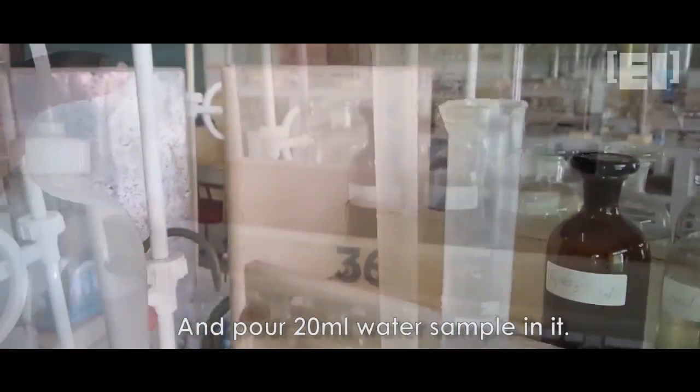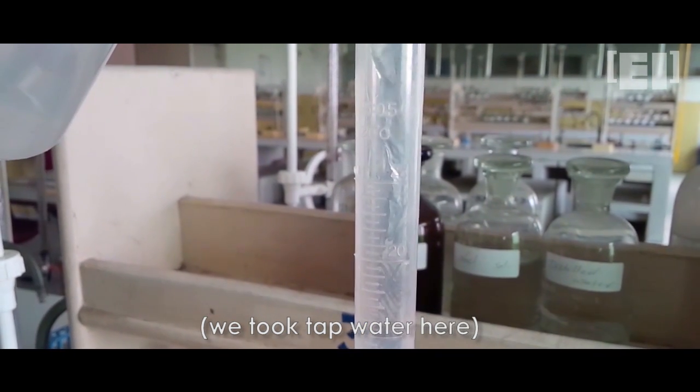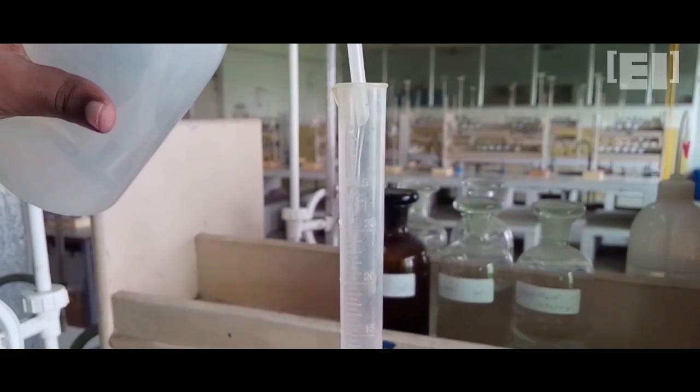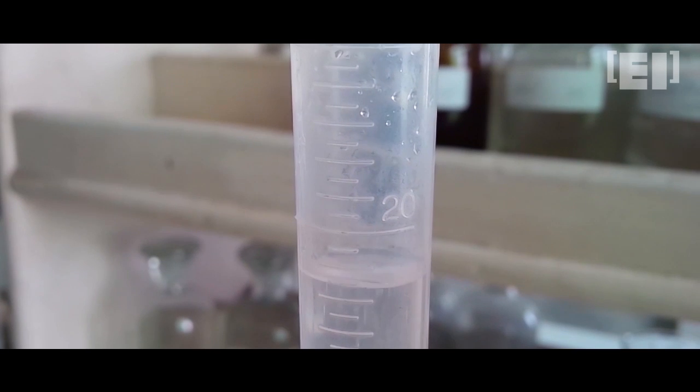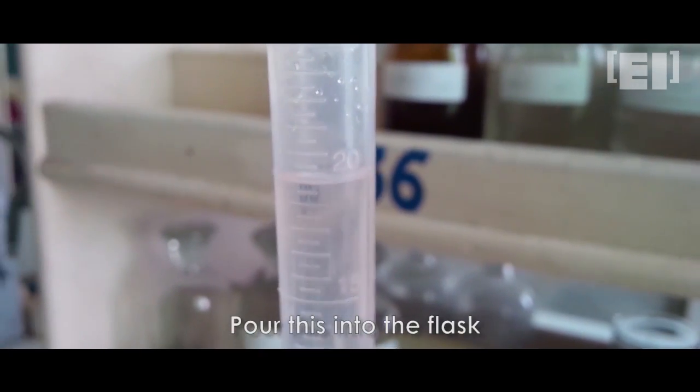Pour 20 ml of given water sample in the measuring cylinder. That's done! Pour this into the flask carefully.